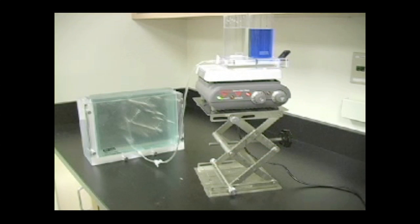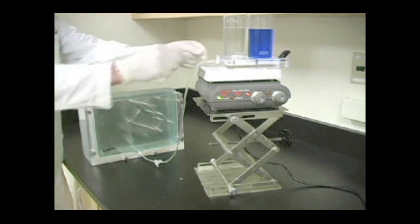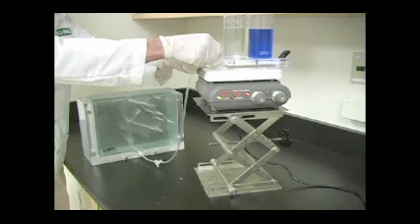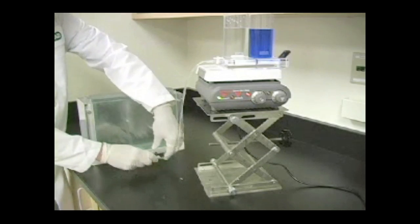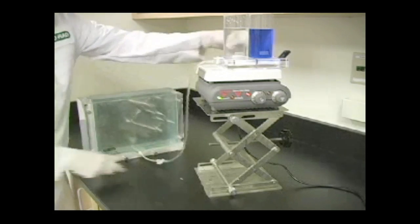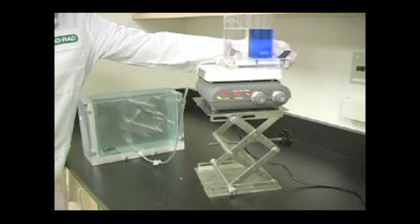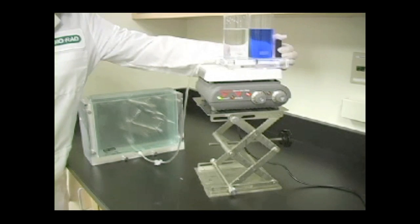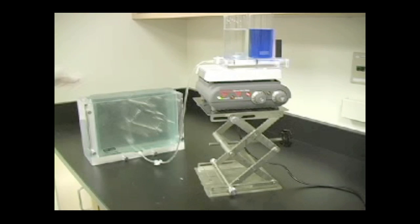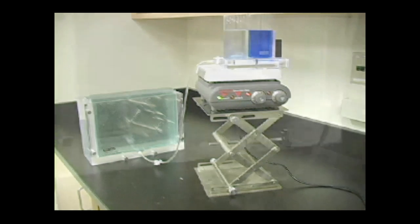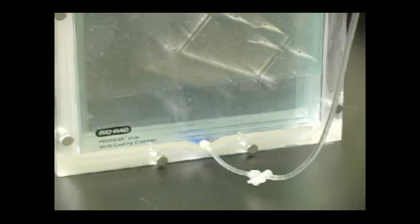Start casting the gels by opening the stopcocks to the casting chamber and the gradient former. Allow the light monomer solution to enter the casting chamber until the level of the light solution is equal to the level of the heavy solution. Open the valve stem on the gradient former once the solution levels are equal. Do not allow air bubbles to enter the gel. This should help compensate for the v-groove in the multicasting chamber.